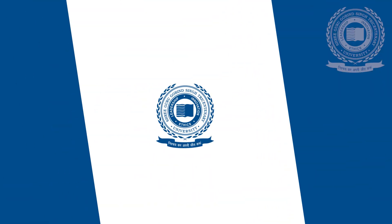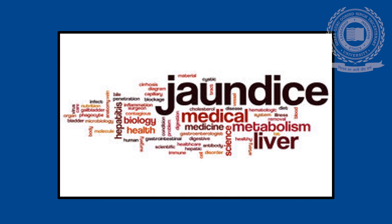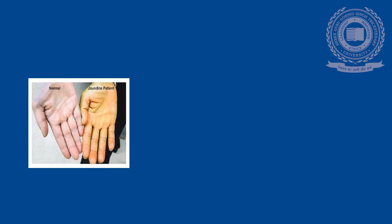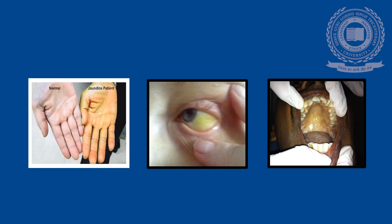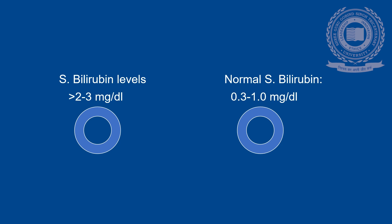Let us know first what is jaundice? Jaundice can be defined as the yellowish discoloration of skin, sclera and mucous membrane when the serum bilirubin levels are more than 2-3 mg per deciliter. Normal levels of serum bilirubin are 0.3-1 mg per deciliter.